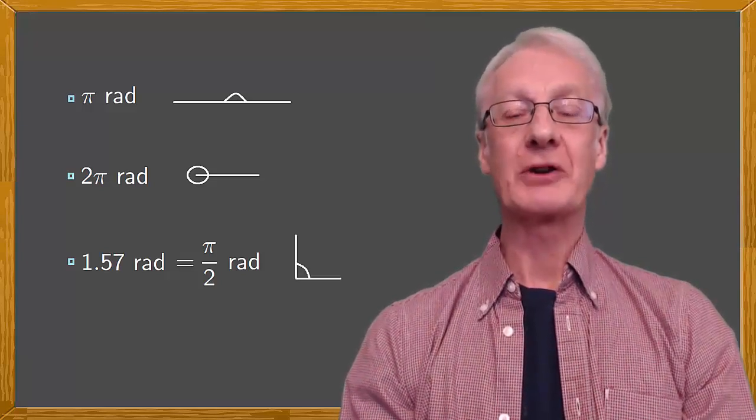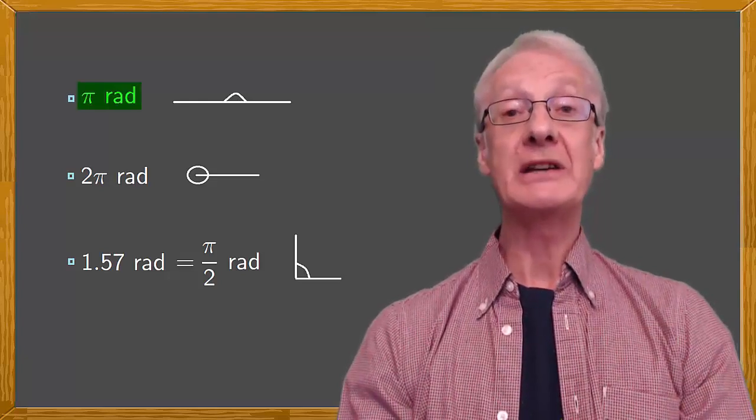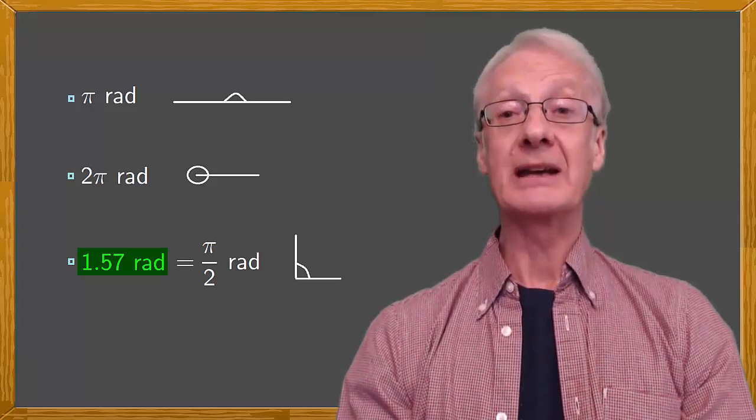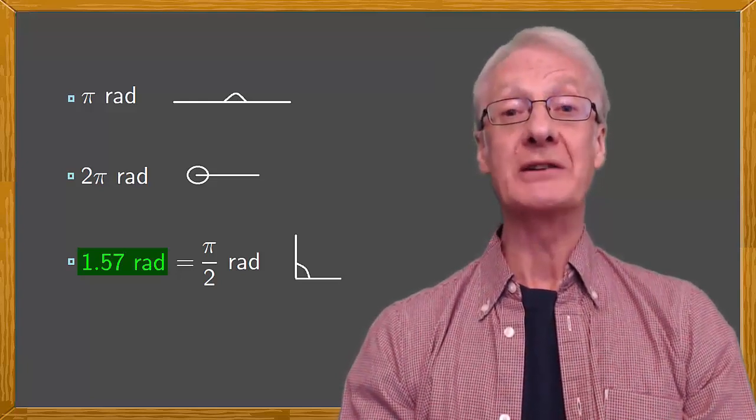Okay, we're making progress. Already we can draw angles of pi radians, 2 pi radians, and even something as complicated as an angle that measures 1.57 radians.